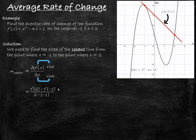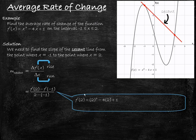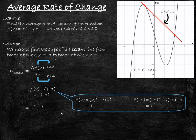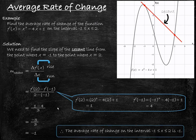To evaluate our numerator, to find f(2) we substitute 2 in for x in the equation, giving us 2³ − 4(2) + 1, which results in a value of 1. Similarly, to find f(−1) we substitute negative 1, giving us (−1)³ − 4(−1) + 1, which gives a value of 4. So in our numerator we have 1 minus 4, and our denominator 2 minus negative 1 works out to 3. Evaluating gives us negative 3 divided by 3, which is negative 1. Therefore, our average rate of change on the interval negative 1 to 2 is negative 1.